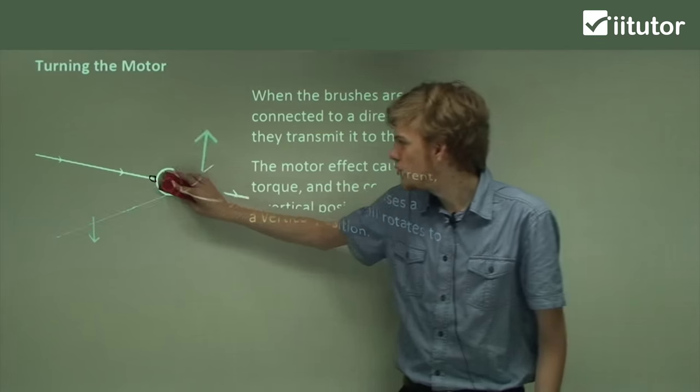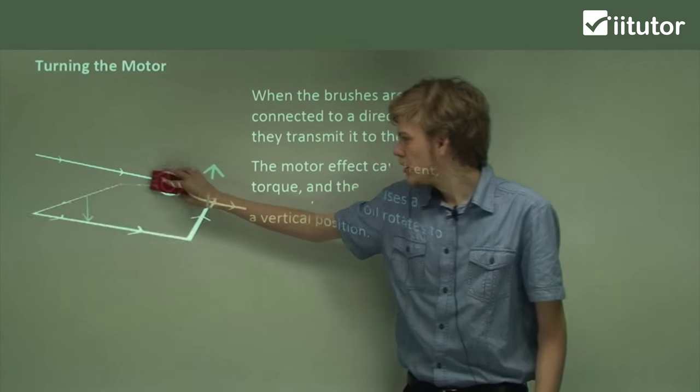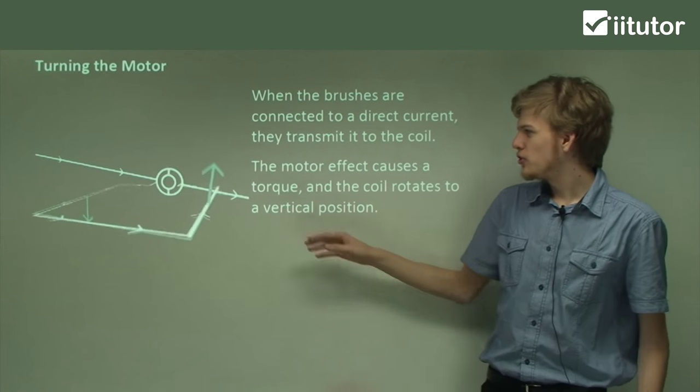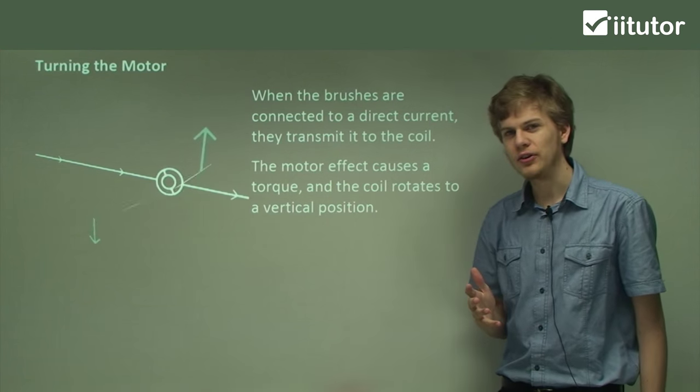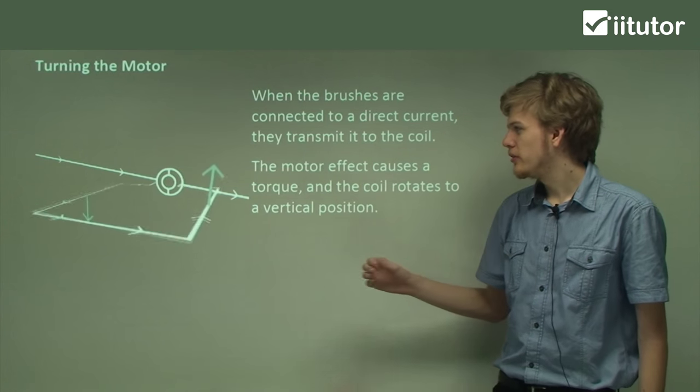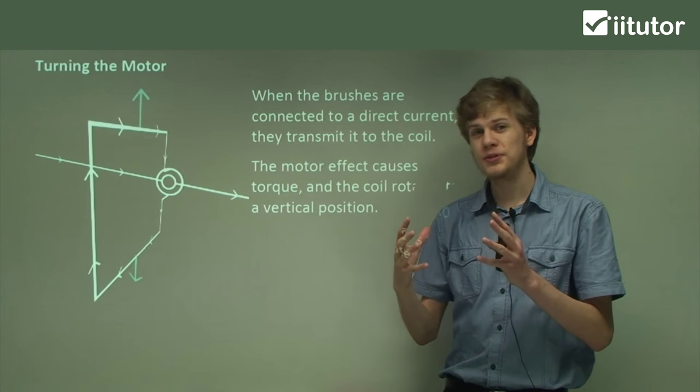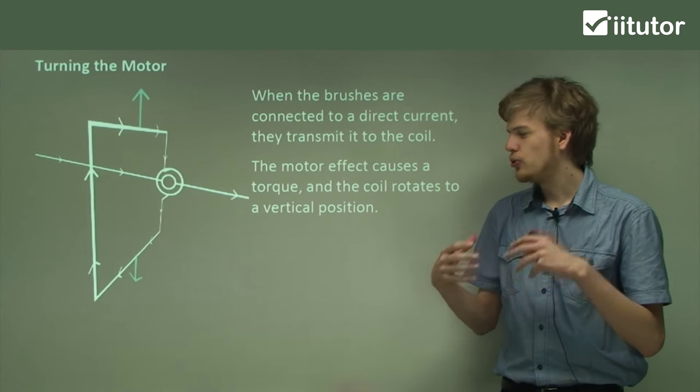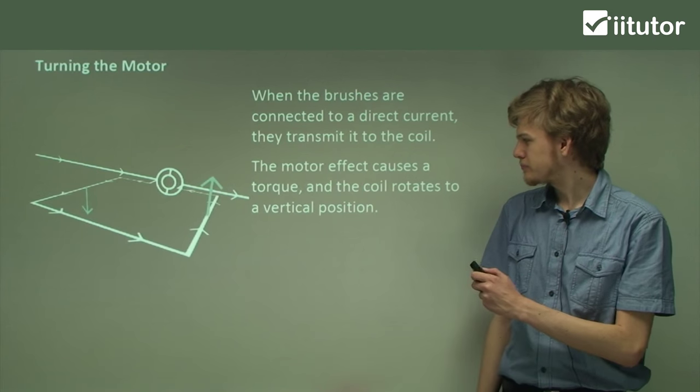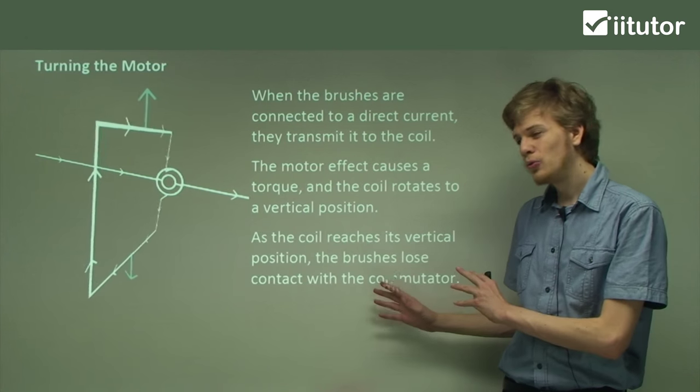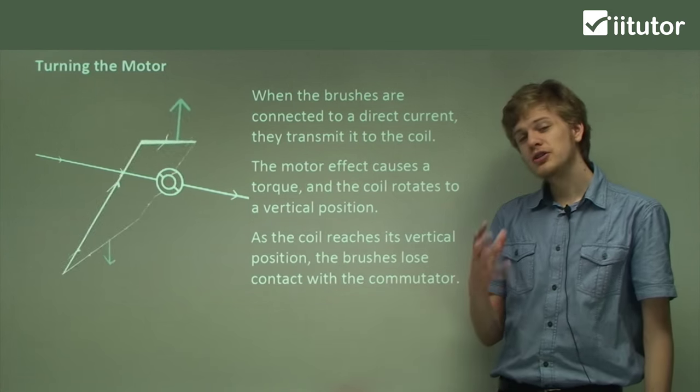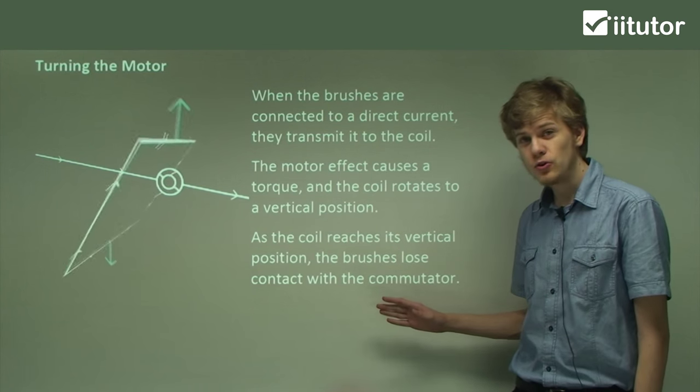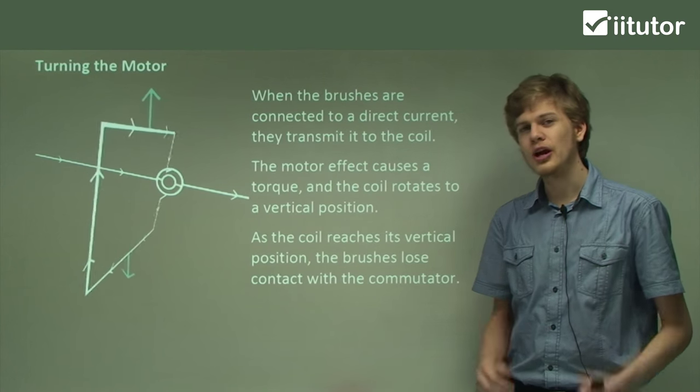So it gets all the way up to a vertical position. But what will happen after this? What's happening to the brushes as they go over the split ring commutator? Once the commutator reaches the vertical position, the split in it is what's connected to the external current. So as the coil reaches its vertical position, the brushes lose contact with the commutator. That means that just as it gets to its vertical position, there is no current running through the armature.